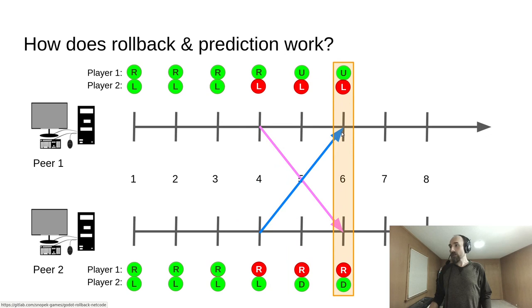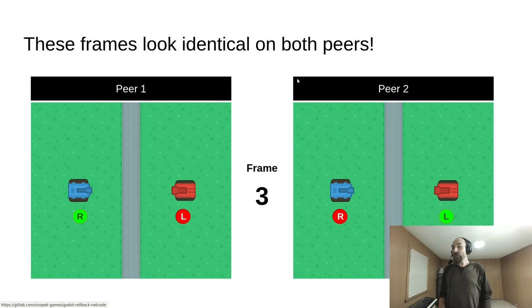On frame number 6, player 1 is still pressing up, player 2 is still pressing down. We received the input from tick number 4, and it matches our prediction. On the next frame, the input from tick number 5 will arrive—that's when the players changed their input, so that's when a rollback will come. But before we look at that, I want to look at frame 3 and frame 4. These two frames look identical on both peers.